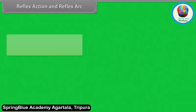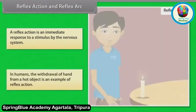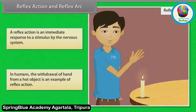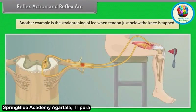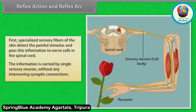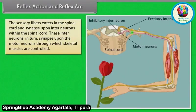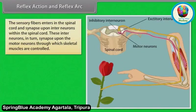A reflex action is an immediate response to a stimulus by the nervous system. In humans, the withdrawal of the hand from a hot object is an example of reflex action. Another example is the straightening of the leg when the tendon just below the knee is tapped. Specialized sensory fibers of the skin detect the painful stimulus and pass this information to nerve cells in the spinal cord via a single sensory neuron without any intervening synaptic connections. The sensory fibers enter the spinal cord and synapse upon interneurons within it.